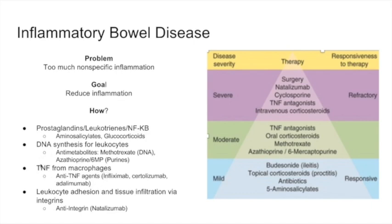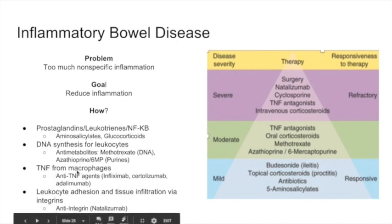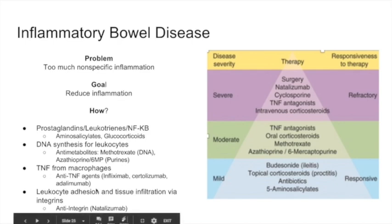A third thing we can do is block TNF — tumor necrosis factor — which is secreted from macrophages in response to inflammation. We can use anti-TNF agents like infliximab, certolizumab, and adalimumab. All of these are monoclonal antibodies designed to block TNF.